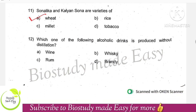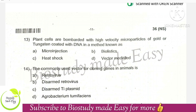Sonalika and Kalyan Sona are varieties of — the right option is option A, they are varieties of wheat. Which of the following alcoholic drinks is produced without distillation? Option A is the right answer: wine. With distillation, other drinks are prepared. Plant cells are bombarded with high velocity micro-particles of gold or tungsten coated with DNA in a method known as — the right option is biolistics, option B.